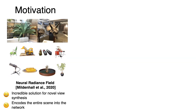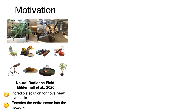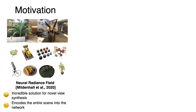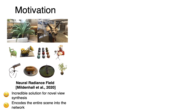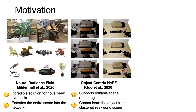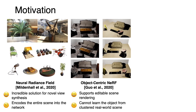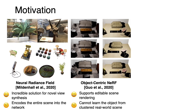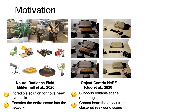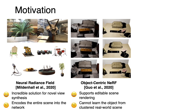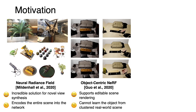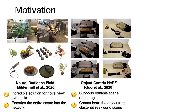However, NeRF encodes the entire scene as a whole, which limits the ability to perform editing tasks such as moving or adding furniture. Recently, object-centric NeRF enables editable scene rendering by learning one model per object and then performing joint rendering. But the training images captured for each individual object is infeasible for cluttered real-world scenes.